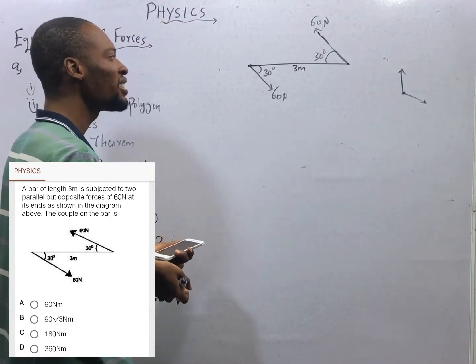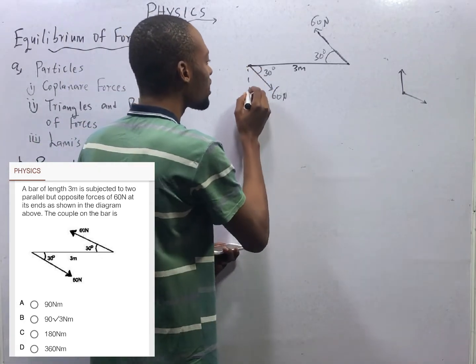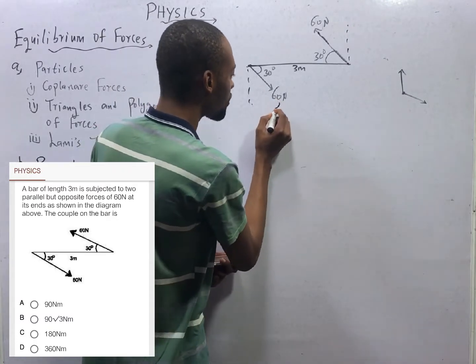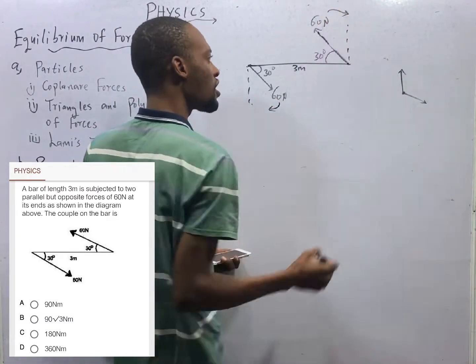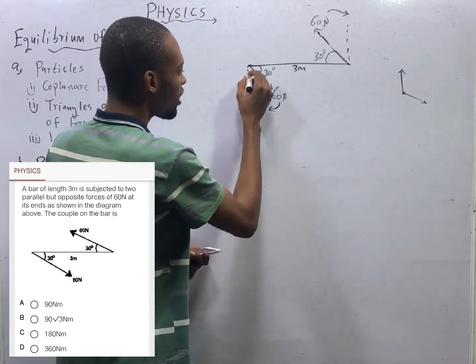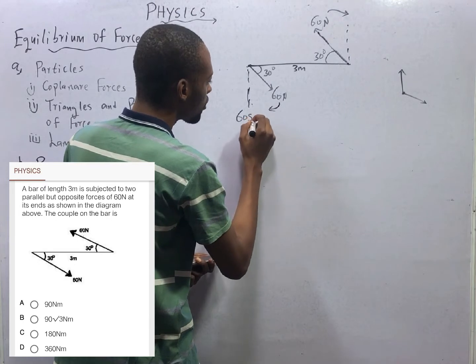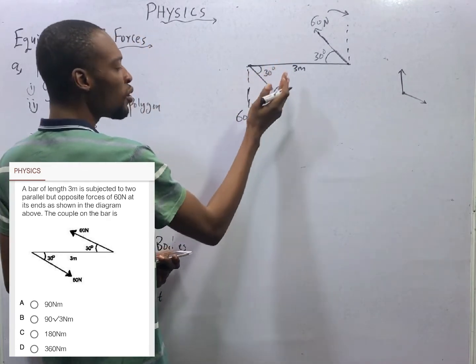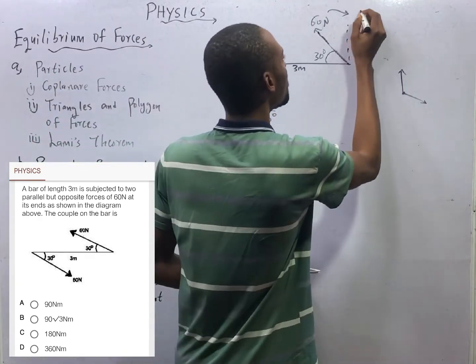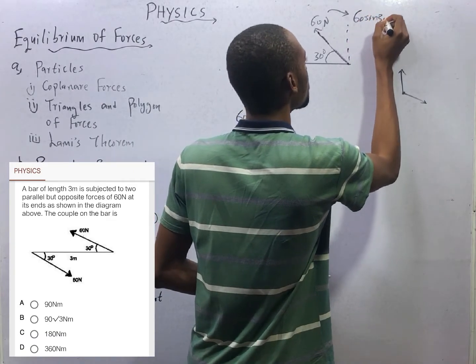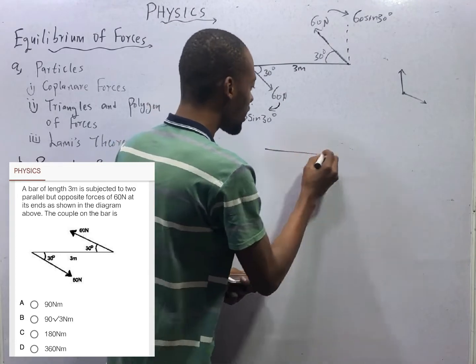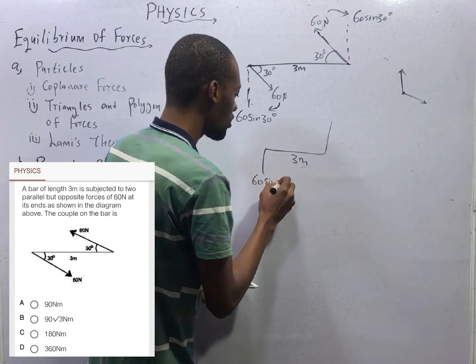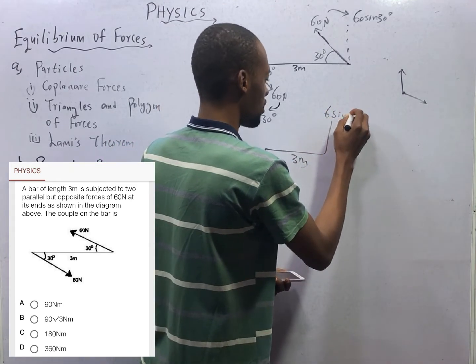The couple of the bar will simply be one of the forces times the total distance. But the force and distance should be perpendicular. What do we do? We therefore resolve this force here and resolve this force here. Here we have 60 sine 30 degrees. Why? As you are resolving this here, you are expanding the angle, you are opening, you use sine. Similarly, here is 60 sine 30 degrees.